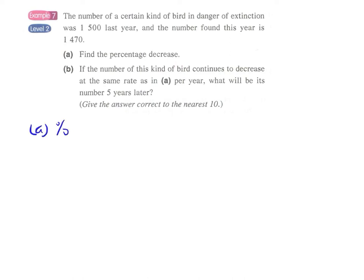We can simply apply the formula for calculating percentage change: 1500 minus 1470 divided by the original value which is 1500, multiplied by 100%. The answer is 2%.